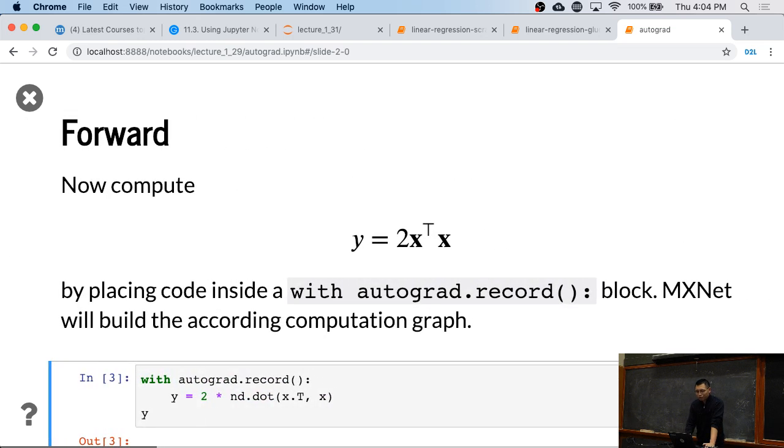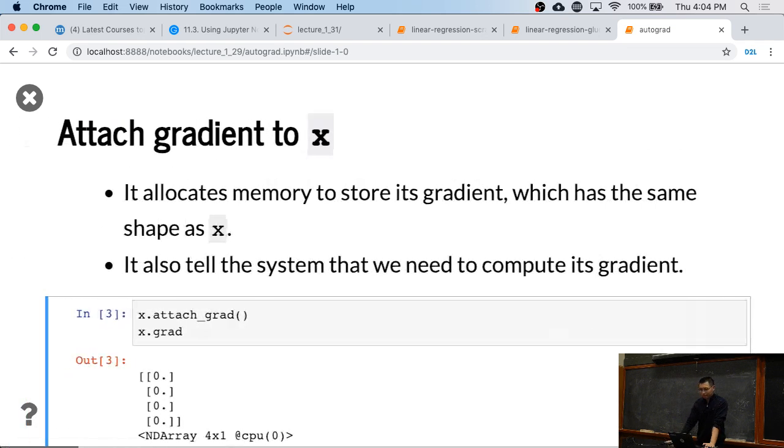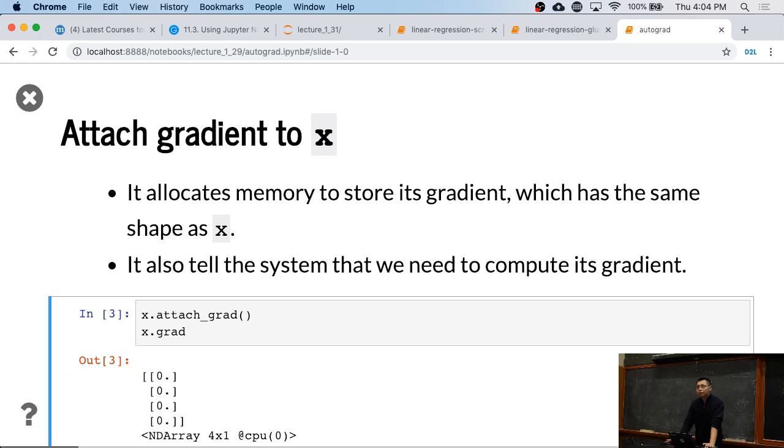Then in the forward path, we can just compute Y equals 2 times transpose X times X. Question: Why do you have to do attach grads before? Why can't you call it directly instead of doing attached grad first? Well, you need a tail system. Actually, you can do after that, but you need before the backward path.